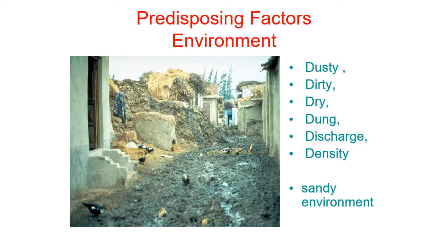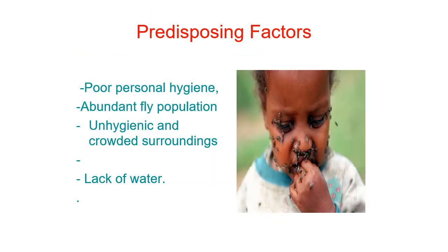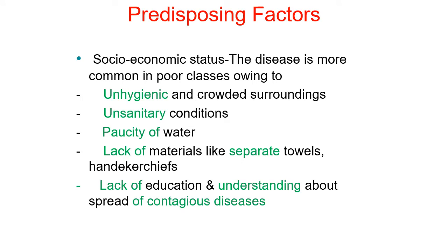Poor personal hygiene, abundant fly population, unhygienic and crowded surroundings, and lack of water — scarcity of water is an important predisposing factor. The disease is more common in poor classes owing to unsanitary conditions, lack of separate towels and handkerchiefs, and lack of education and understanding about the spread of contagious diseases.